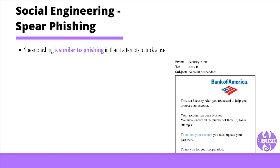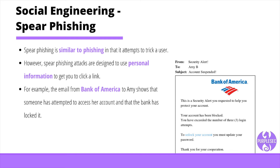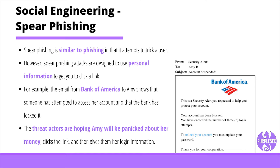Spear phishing is similar to phishing in that it attempts to trick a user. However, spear phishing attacks are designed to use personal information to get you to click a link. They will also sometimes use urgency or risk of monetary value to bait their victims. For example, an email from Bank of America to Amy B shows that someone has attempted to access her account and that the bank has locked it. In order for Amy to resolve the issue, all she has to do is click on a link to reset her password. The threat actors are hoping Amy will be panicked about her money, clicks the link, and then gives them her login information.